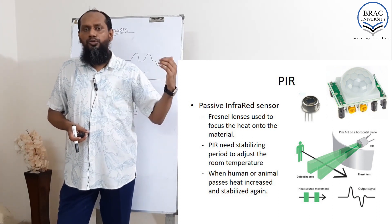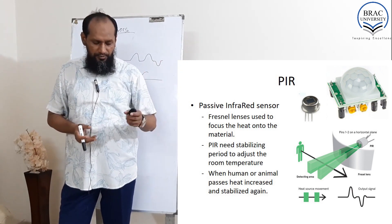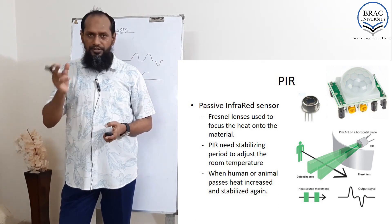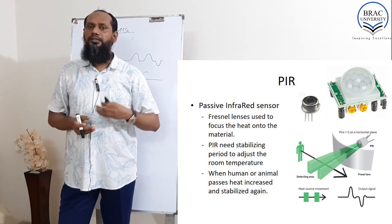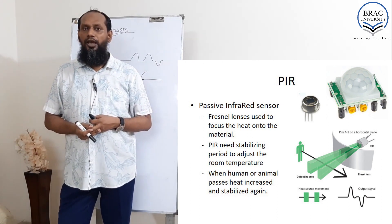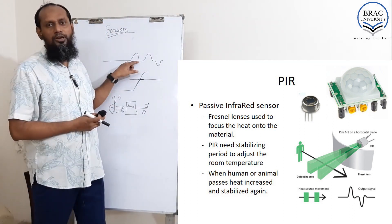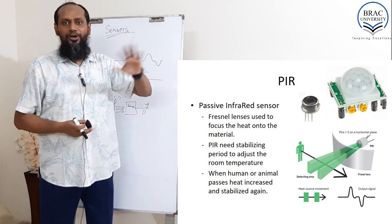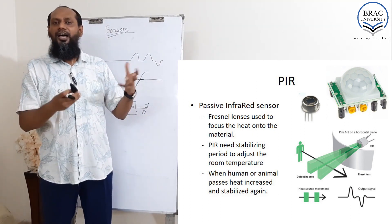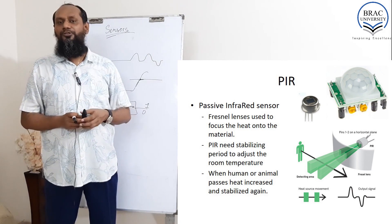The PIR can be used to identify whether someone is coming from left to right or right to left. This is a very interesting and very commonly used sensor. For example, in some toilets, the PIR sensor turns the light on automatically when you enter. After some time, the light will go off. On that occasion, you have to move your hand or legs so the heat increases again and the light turns back on.